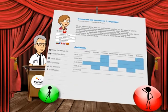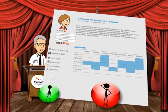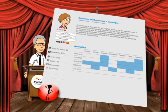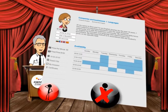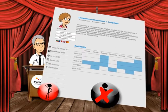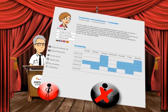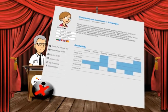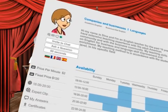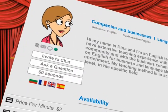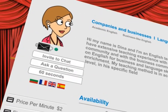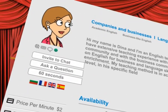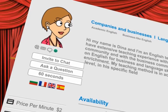A red light indicates that the expert is now busy with another call. A black light indicates that the expert is not available for a call right now. If the mailbox icon is turned on, it indicates that the expert is available and you can send them a question through the question and answer system.